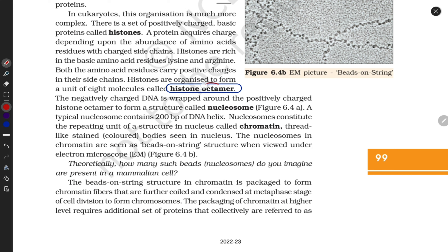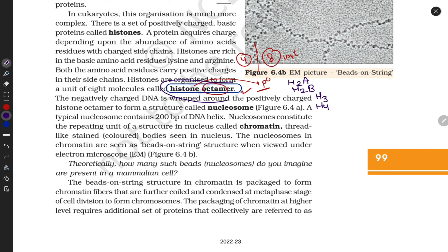According to the name 'octamer,' eight units need to be present. This histone octamer is made up of histone proteins. The names of these histone proteins are H2A, H2B, H3, and H4.